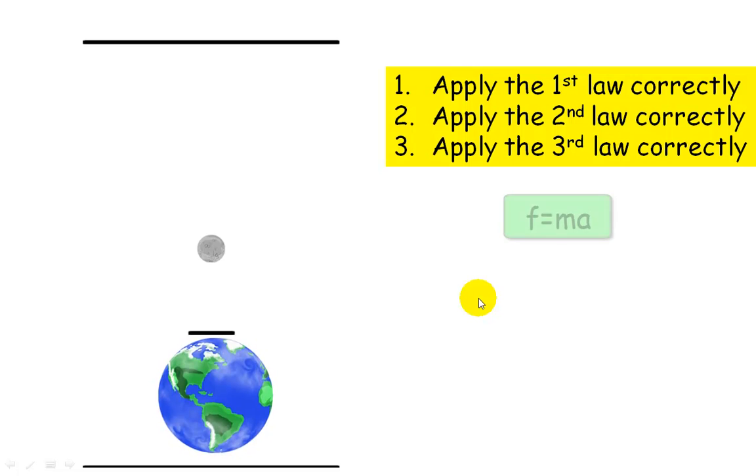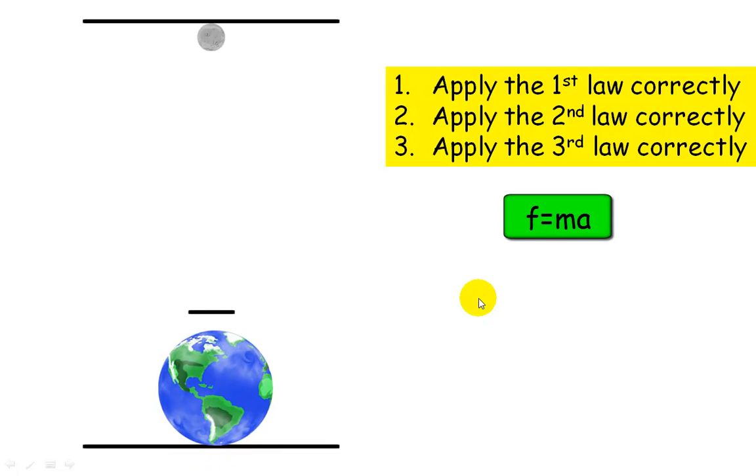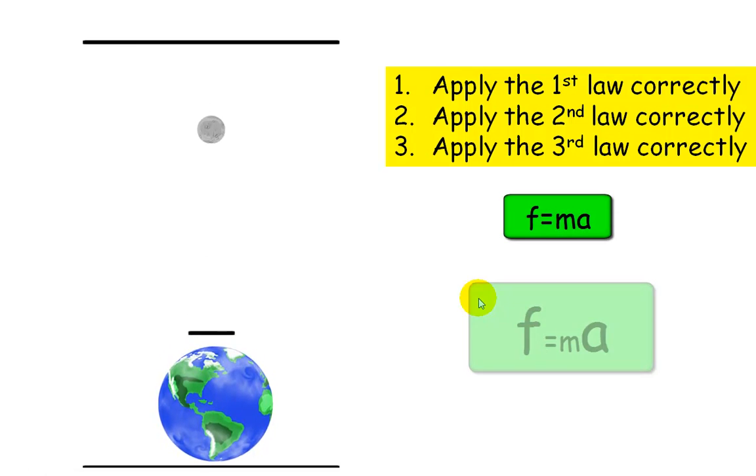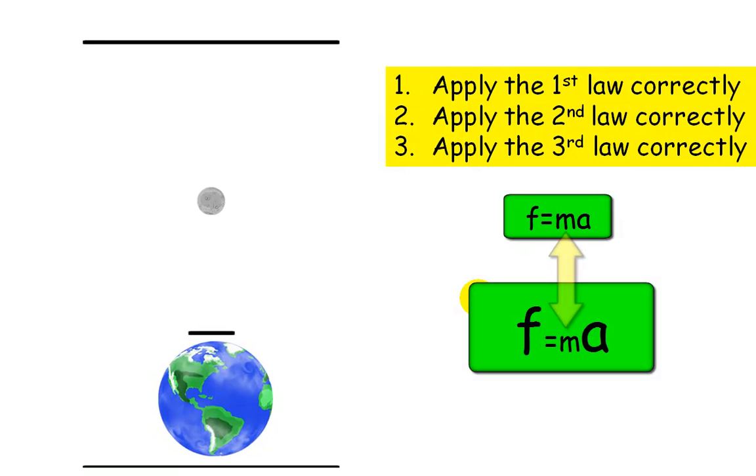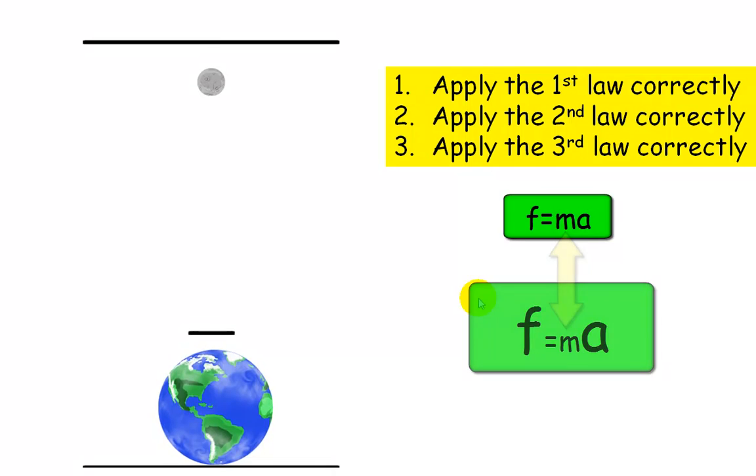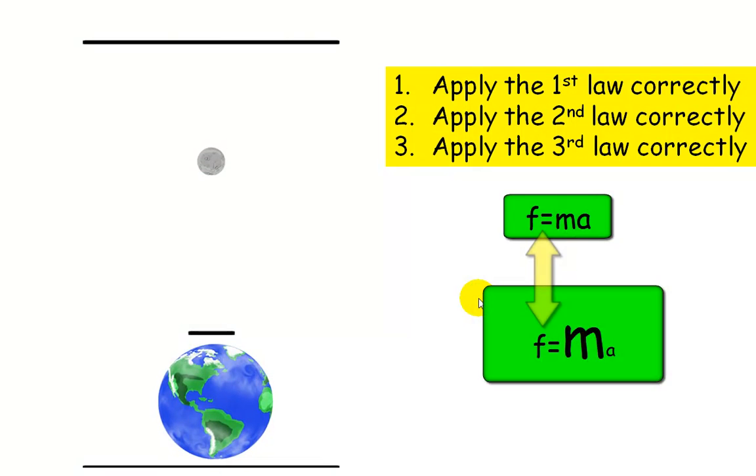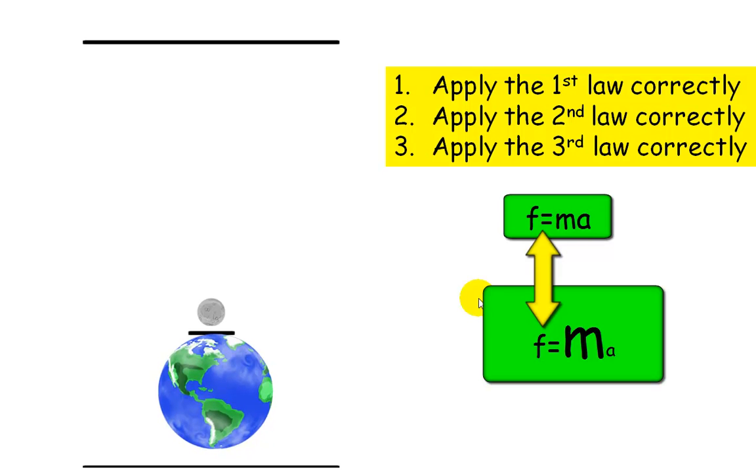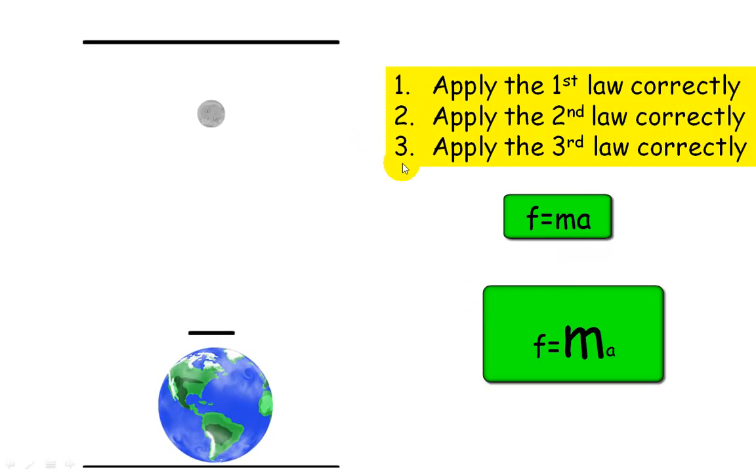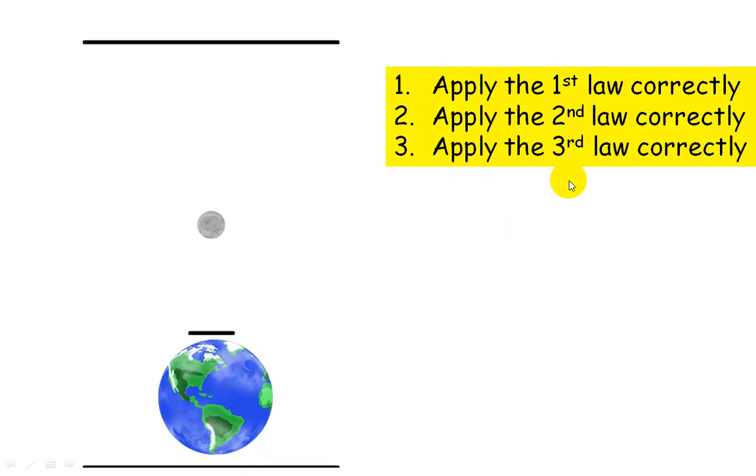The second law states that force is proportional to mass times acceleration. So if you keep the mass the same, increasing force will increase acceleration. If you change the mass and you keep the force the same, then making the mass bigger will make the acceleration smaller. I can't really apply the second law without also applying the third law.